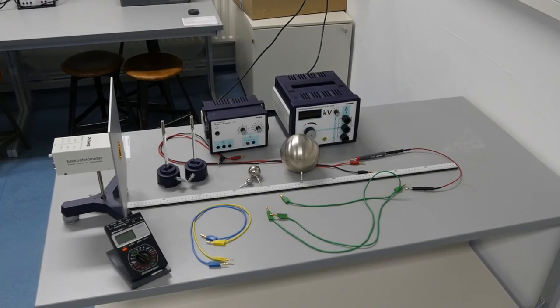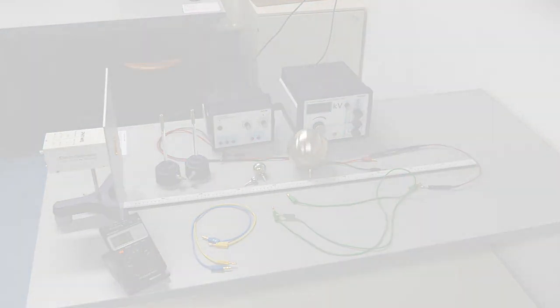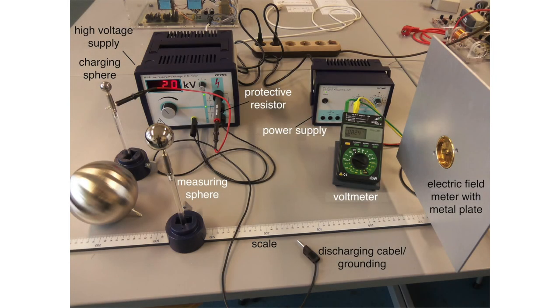The aim of this experiment is to verify the radial behavior of Coulomb's law and to measure the electric field of a configuration that can be calculated with the method of image charges. The setup comprises a high voltage supply with protective resistor.